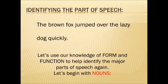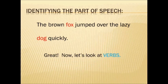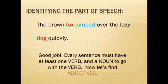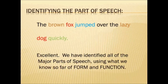Starting with nouns — nouns are people, places, things, or ideas. So we said that the fox and dog are both nouns — they're both things. Now let's look at verbs. Every sentence must have at least one verb and a noun to go with the verb. Now let's find some adjectives — we've talked a lot about adjectives today. And let's see if there are any adverbs in the sentence. So we have identified all of the major parts of speech using what we know so far of form and function.